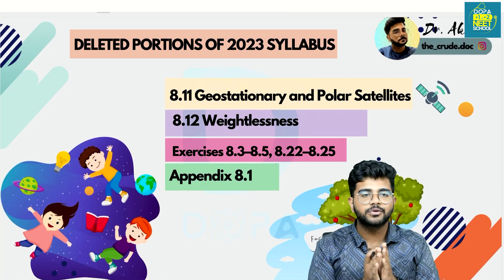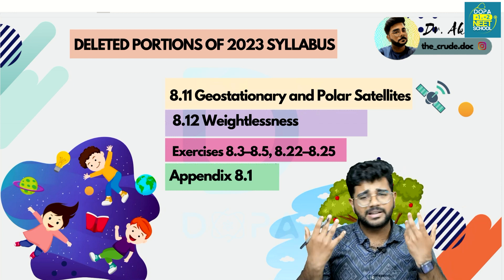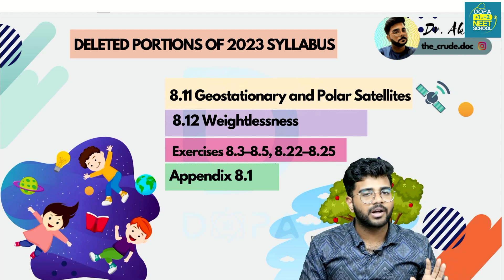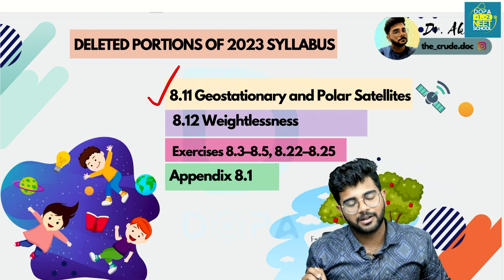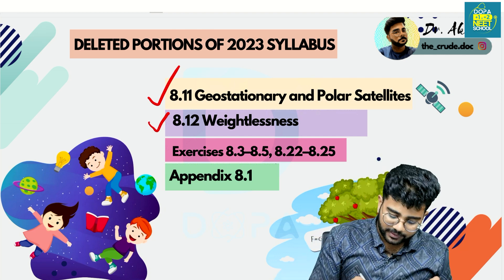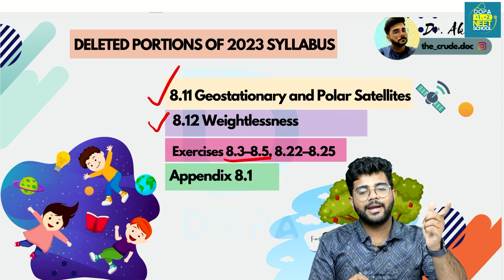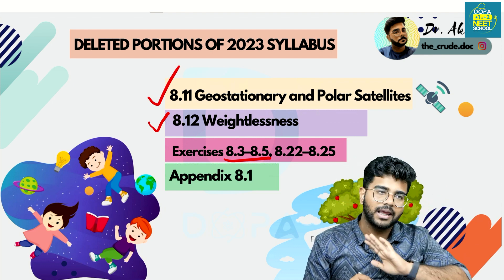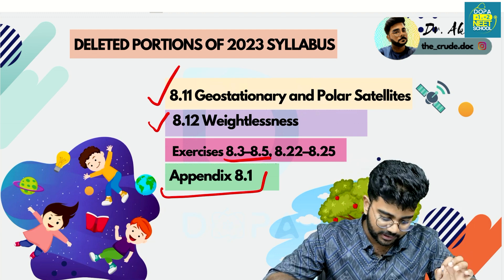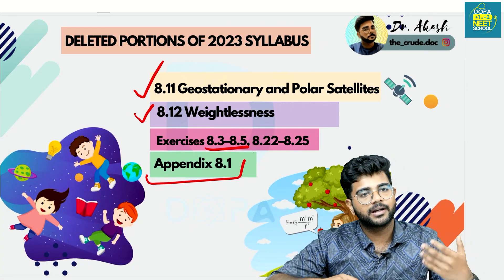One of the most confusing things is geostationary and polar satellites — that is the orbit, the velocity, the escape velocity. And the concept of weightlessness. Look at the exercises: 8.3, 8.4, 8.5, and 8.22 to 8.25. We are going to remove appendix 8.1 and delete this portion of the chapter.